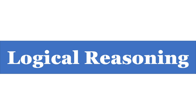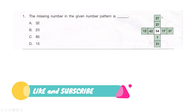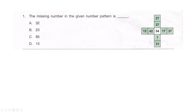Our first question reads: the missing number in the given number pattern. We have to find the missing number. Is it option A: 32, option B: 23, option C: 85, or option D: 15? I'll give you some time to think and solve this.